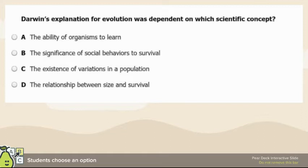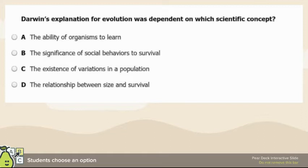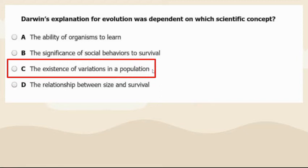Darwin's explanation for evolution depends on the existence of variations in a population — variation has to exist.